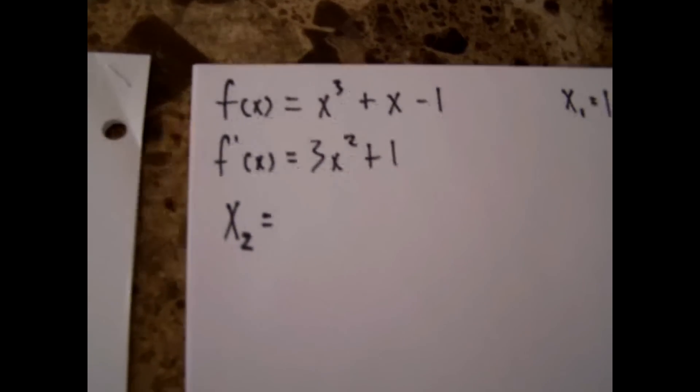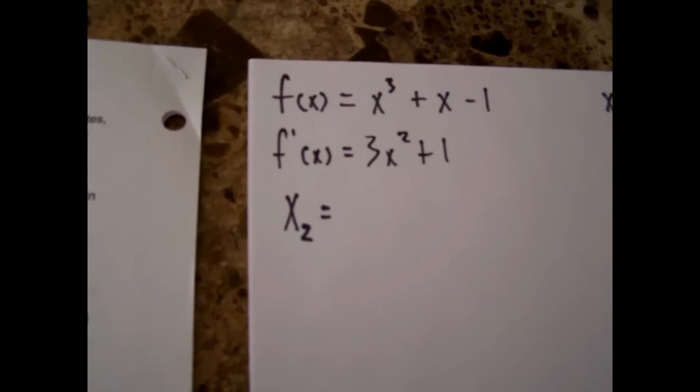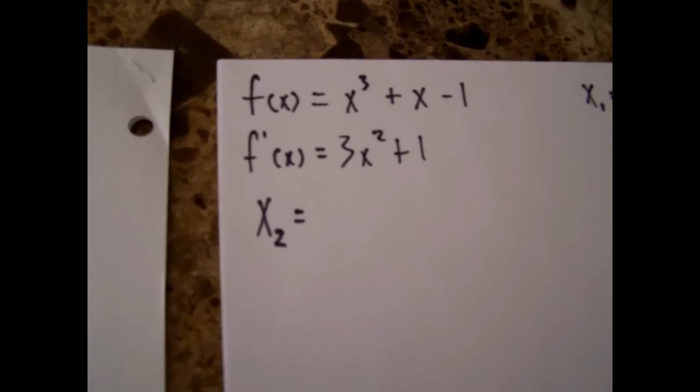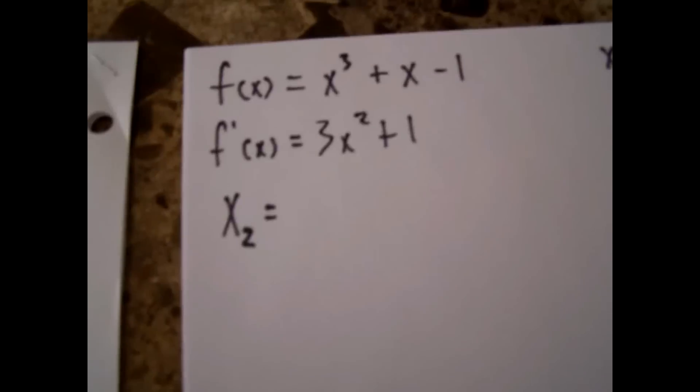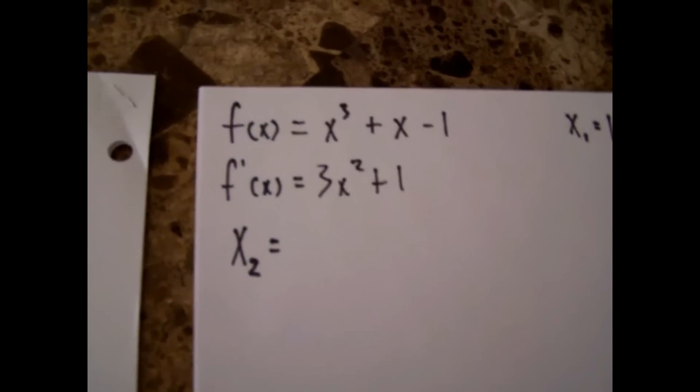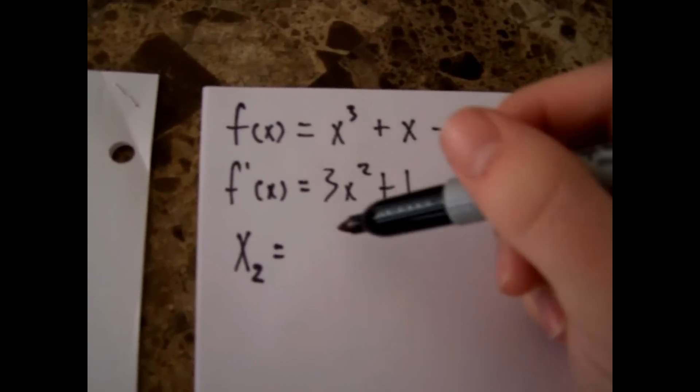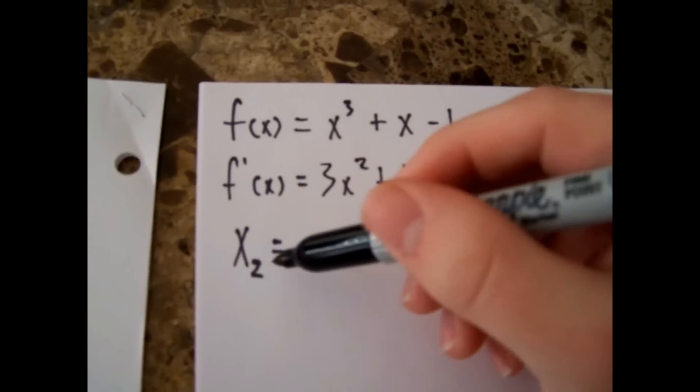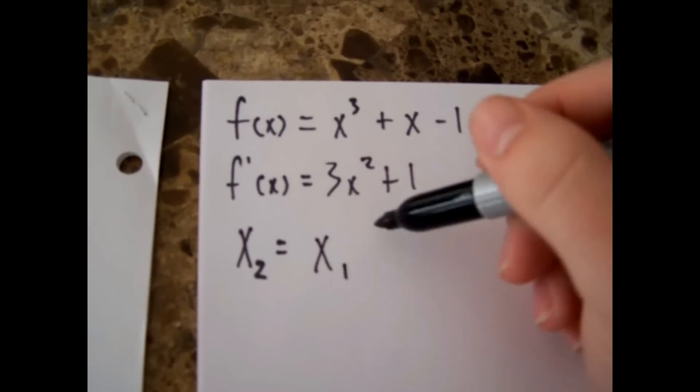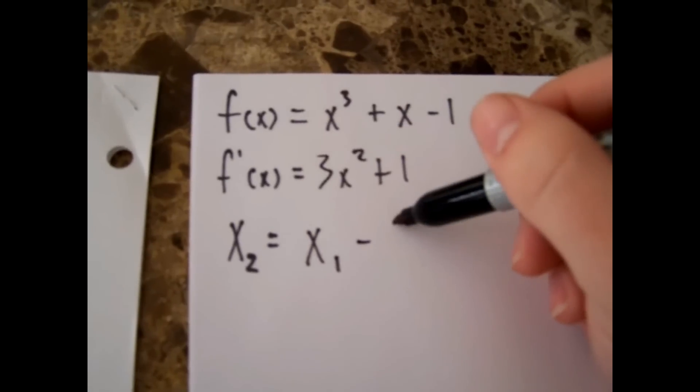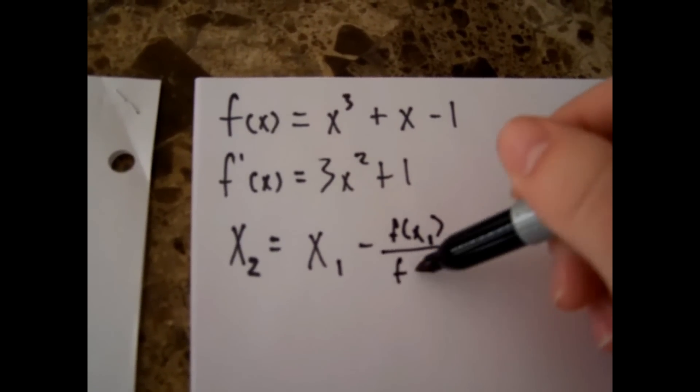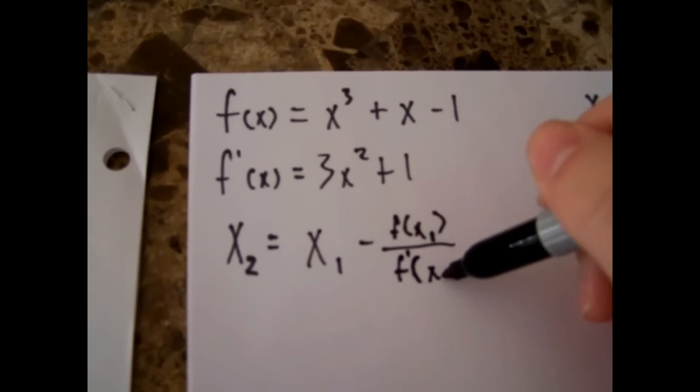Now to solve for your first guess after the first iteration using Newton's method, basically what you have to do, you have to plug your first guess which is one that's given into the function for iterations which is as follows: x₂ = x₁ - f(x₁)/f'(x₁).